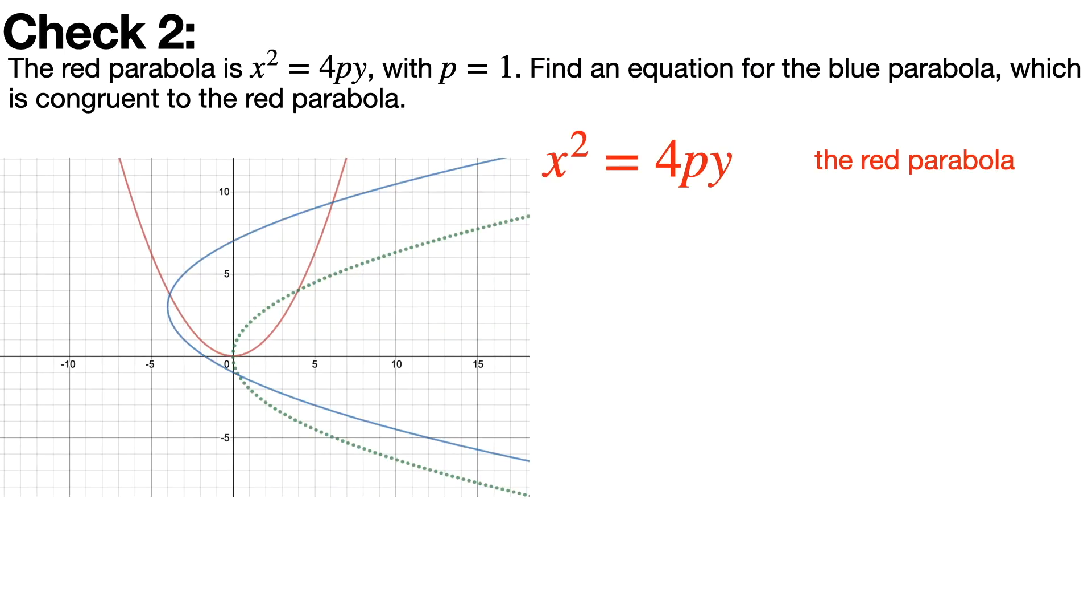So we start off with the red parabola that has the equation x² = 4py. And the first thing in general that we're going to want to do is reflect it to get the shape right. So y² = 4px is the green dotted parabola that you see in the picture. And then we can move it.